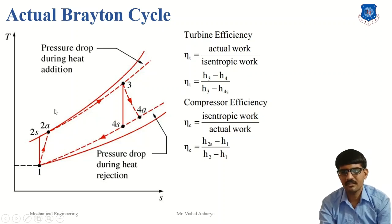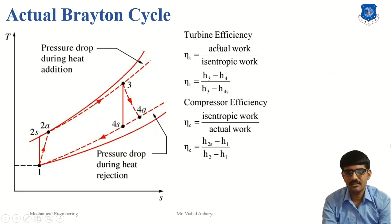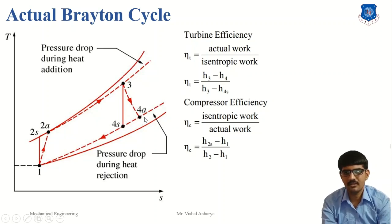So in compression, we require more work input than in the ideal condition, and here we have less work output compared to the ideal condition. To understand this clearly: turbine efficiency is defined as actual work divided by isentropic work. Here, actual work corresponds to the 3-to-4A expansion process and isentropic work corresponds to the 3-to-4 isentropic expansion. So the heat drop is H3 minus H4 (actual) versus H3 minus H4s (isentropic). As shown in the figure, H3 minus H4 is less than H3 minus H4s, so turbine efficiency is less than 100%.